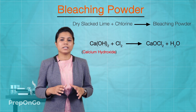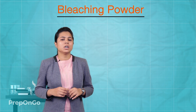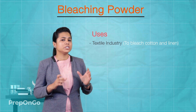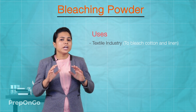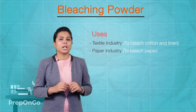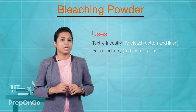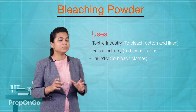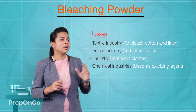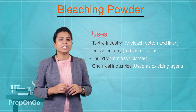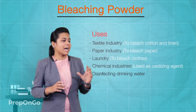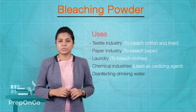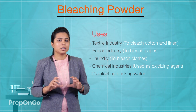Bleaching powder is useful in the textile industries for bleaching cotton and linen. It is also used in the paper pulp industry for bleaching papers, and is commonly used in laundries as well. Bleaching powder is also important as an oxidizing agent in many chemical industries, and it is used as a disinfectant for drinking water to make it germ-free.